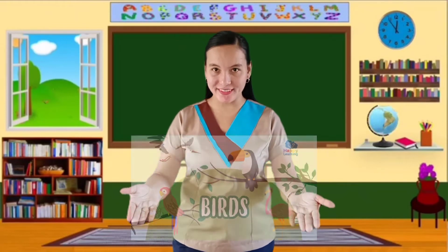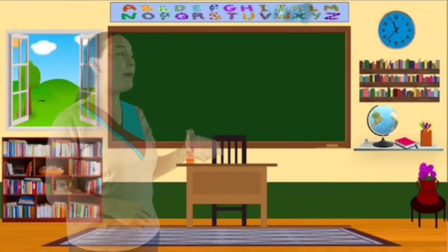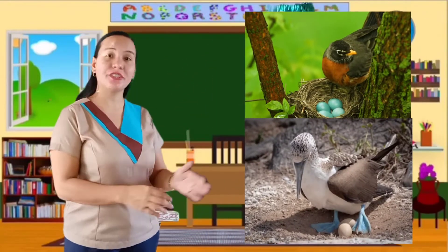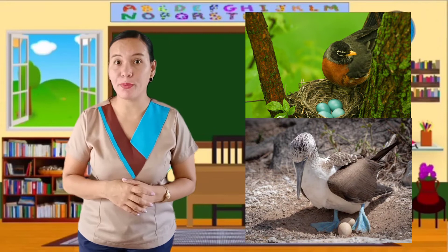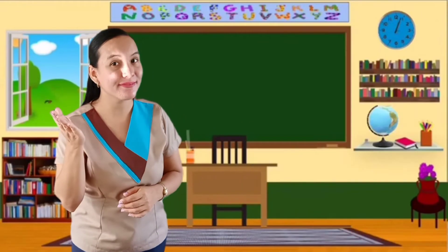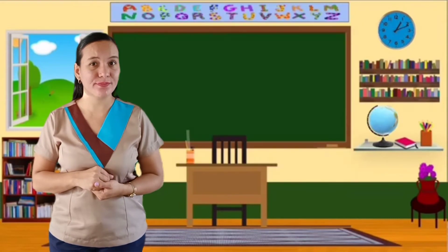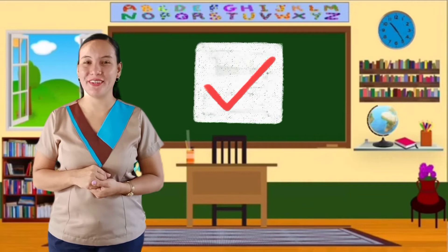First, we will be talking about birds. By looking at these pictures, can you tell how birds reproduce? Correct! Birds reproduce by laying eggs. How many legs do birds have? Very good! They have two legs.